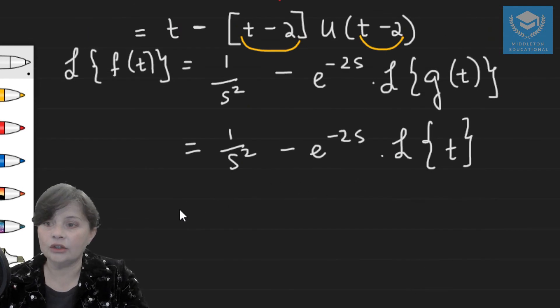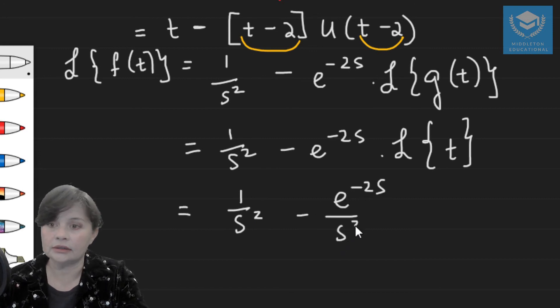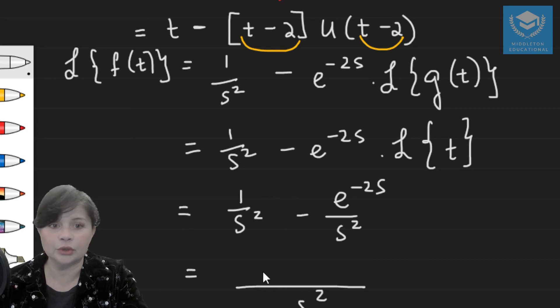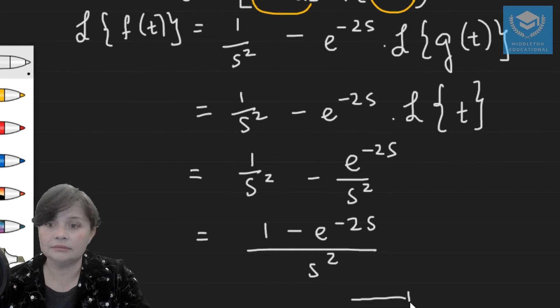So then your complete transform is going to be e to the minus 2s over s squared. And that can be rewritten, depending on the purpose of your question, as 1 minus e to the minus 2s over s squared. And that is your Laplace transform.